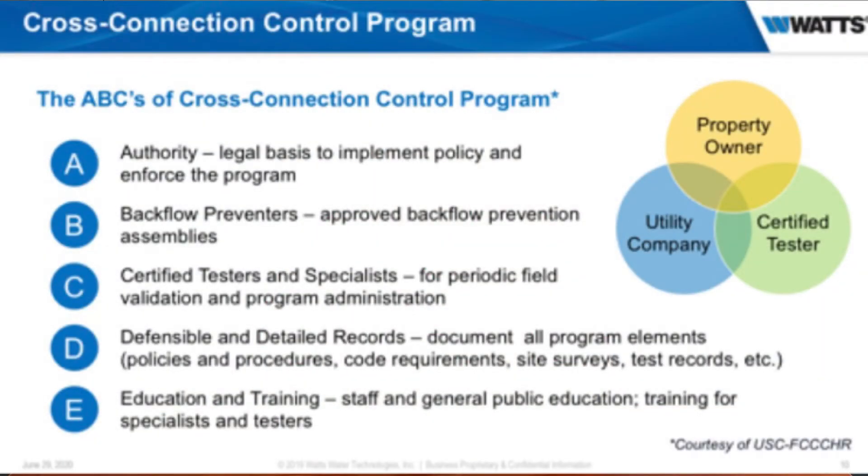The ABCs of a cross-connection control program: A is the Authority — who's going to be the one enforcing this. B is the backflow preventer itself, the actual assembly that you're going to be putting in. C is the certified testers and specialists. You have to be certified. In the state of Virginia, a plumber can install the backflow, but to actually open it up, test it, and work on it, you have to be certified by the state — that's state code, not the Joyous Agency.